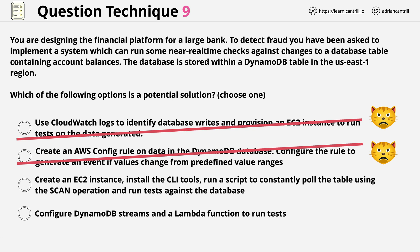So that's two answers already eliminated without reading the question. The next answer suggests creating an EC2 instance, installing CLI tools, running a script to constantly poll the table using the scan operation, and running tests against the database. This answer is possible. I have doubts about its efficiency or whether it's best practice, but the answer doesn't self-eliminate, so we need to leave it in for consideration. By reading it, you already have the information in your mind for when you come to read the question. So it's a potentially correct answer.